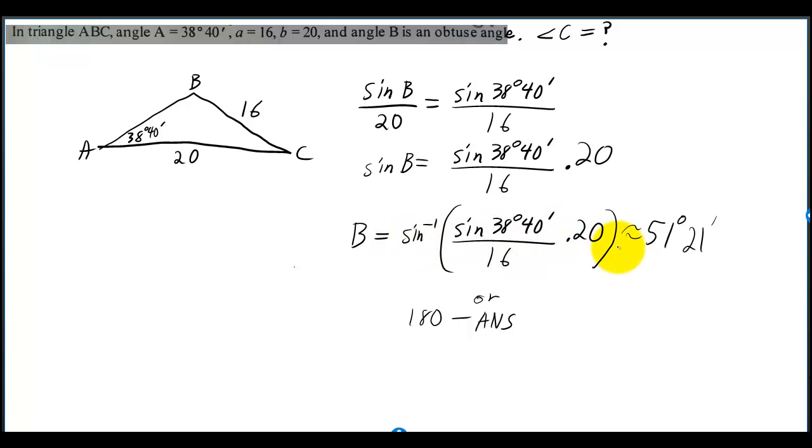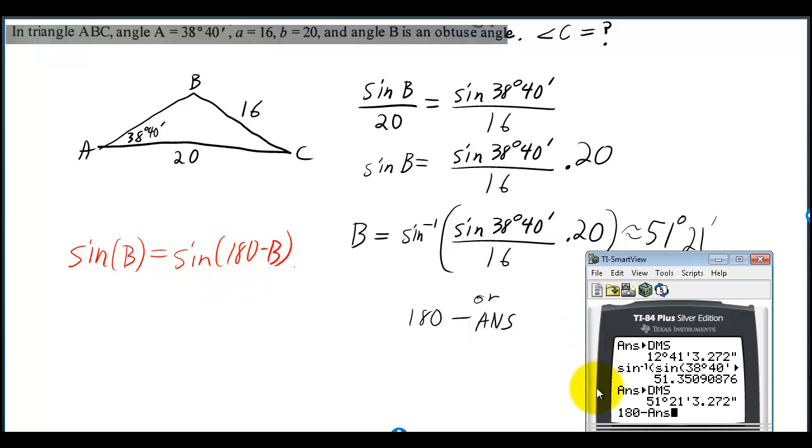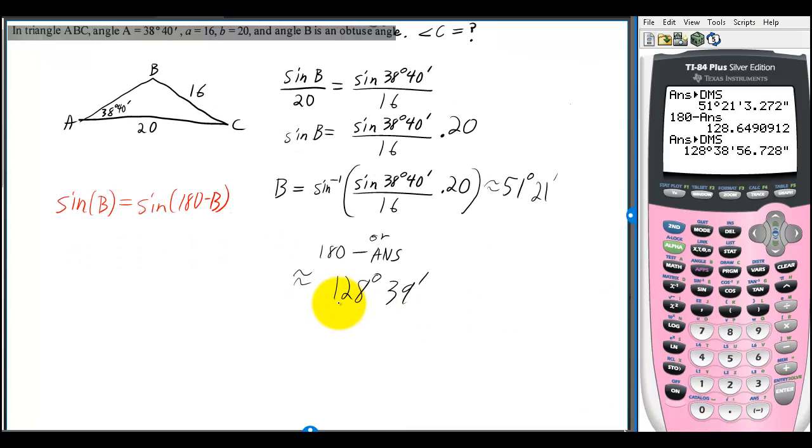But if you type that in a calculator, you'll get about 51 degrees. But they told us angle B is an obtuse angle, so it can't be 51 degrees, which means we have to subtract from 180. There's a formula that says the sine of B is equal to sine of 180 minus B. So we want to do 180 minus the answer we just got, and that gives us approximately 128 degrees and 39 minutes.